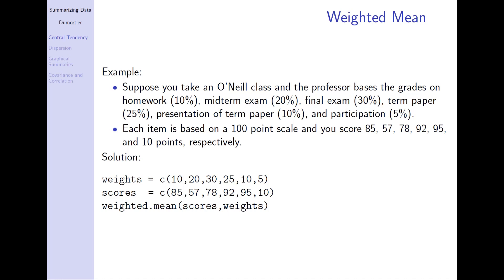Each item — meaning the homework, midterm exam, final exam, etc. — is based on a 100-point scale, and your scores are 85 for homework, 57 for the midterm exam, 78 for the final exam, 92, 95, and 10 points for the term paper, presentation and participation respectively. You can calculate the weighted mean by hand, or you can simply use R for this.